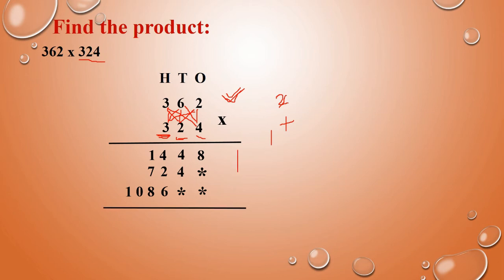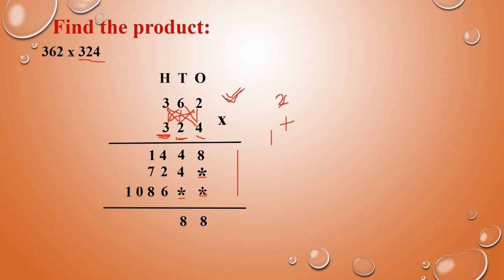So now all 3 digits have been multiplied. In these 3 partial answers, we have to add. Star means no number there. So 8 plus 0 is 8. Again 8 plus 0 is 8. Next, 4 plus 4 is 8; 8 plus 0 is also 8. Next, 4 plus 2 is 6; again 6 plus 6 is 12. So 12 means write 2, carry 1.